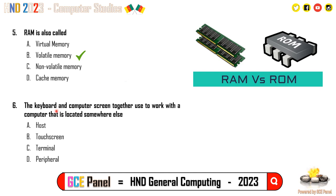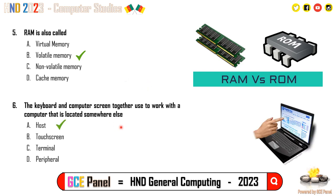Question 6: The keyboard and computer screen used together to work with a computer located somewhere else. That computer located somewhere else is known as the host. A terminal is an electronic or electromechanical hardware device used for entering data into a computer system — an example was the teletype. Peripherals are other components connected to the computer.